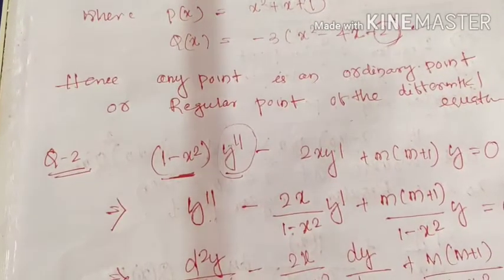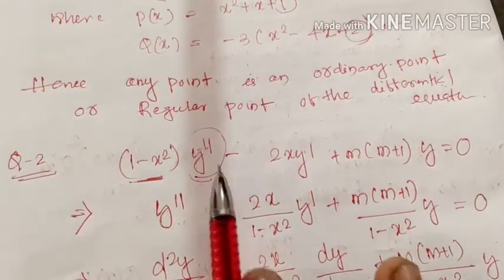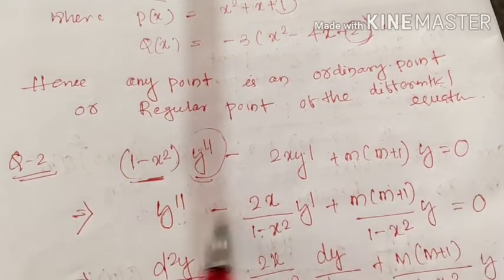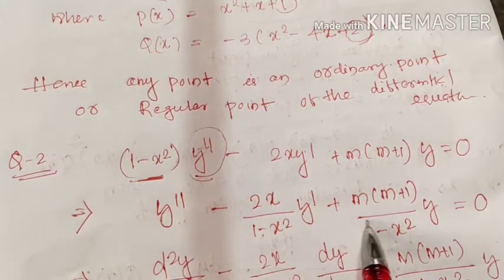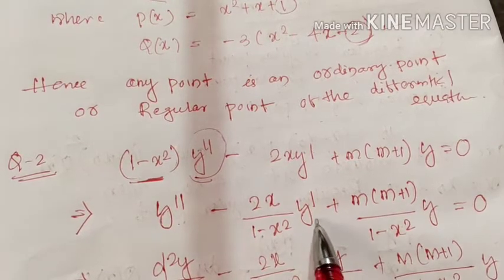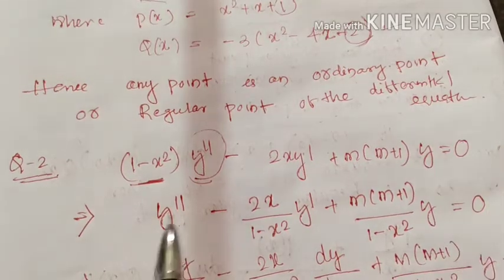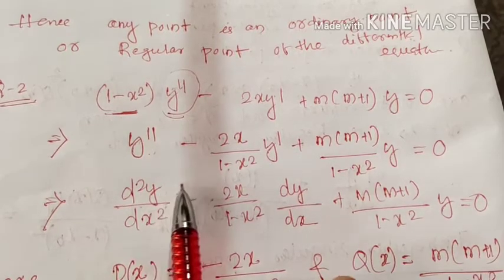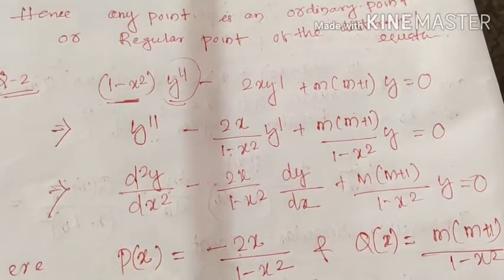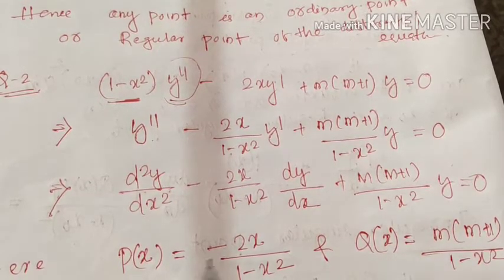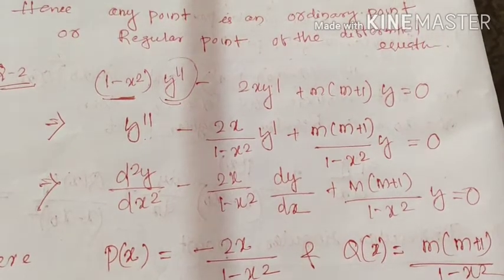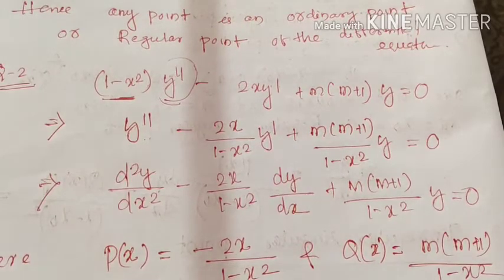Question 2: (1 − x²)·y'' − 2x·y' + m(m+1)·y = 0. Dividing by (1 − x²), we get y'' − [2x/(1 − x²)]·y' + [m(m+1)/(1 − x²)]·y = 0. Comparing with the standard form, p(x) = −2x/(1 − x²) and q(x) = m(m+1)/(1 − x²).